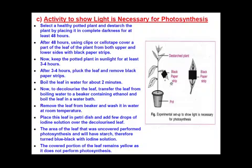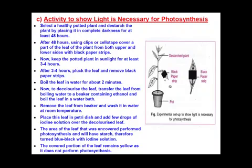After 48 hours, choose one leaf as seen in the diagram and cover its middle portion with a black paper strip or black tape — cover from the upper side as well as the lower side. Then keep the potted plant in sunlight for three to four hours so that some photosynthesis occurs.